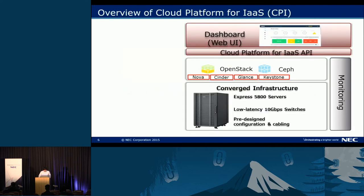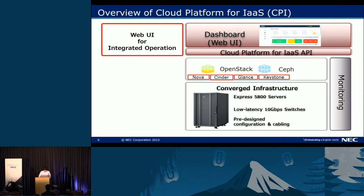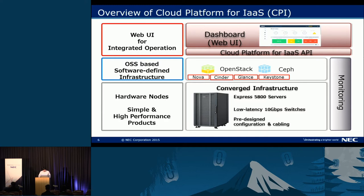Next, I will explain the overview of CPI. CPI contains three components: Web UI, software-defined infrastructure, and hardware. The Web UI is called a dashboard — it is an integrated operational web interface. At the middle of this stack, we use OpenStack and Ceph in order to manage our hardware nodes. As hardware for this product, we use general IA servers and 10 gigabit ethernet switches.